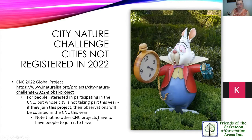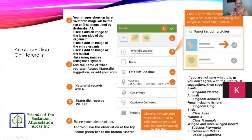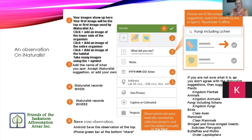Here's how iNaturalist works: go to a flower and take pictures of the top and bottom of the flower and the top and bottom of the leaf. Stay at the same organism and keep pressing the plus sign — take a picture of the whole habitat, the plant, how tall the plant is, as many images as you can. iNaturalist automatically records the time you're in the field and the GPS of your location.